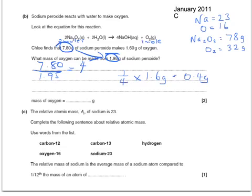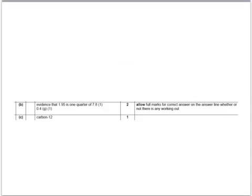In the second question, the relative atomic mass of sodium is 23. So the relative atomic mass is the average mass of a sodium atom compared to one twelfth the mass of which atom? It's carbon-12 — the gold standard again. The mark scheme just wanted evidence that you worked out that 1.95 was a quarter of 7.8, so you'd then take a quarter of 1.6 to get the correct answer for the second mark.